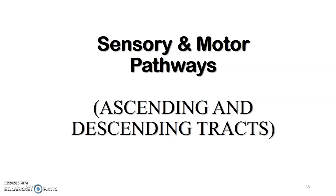Ascending tracts carry information from the body through the spinal cord to the brain — from the spinal cord to the medulla, the pons, the midbrain, thalamus, and the cerebrum and cortex. Descending tracts come from the cortex downward through the thalamus, midbrain, pons, medulla, and spinal cord to the body. If you haven't covered the cerebrum, diencephalon, brainstem, and spinal cord, go back to those lectures first.